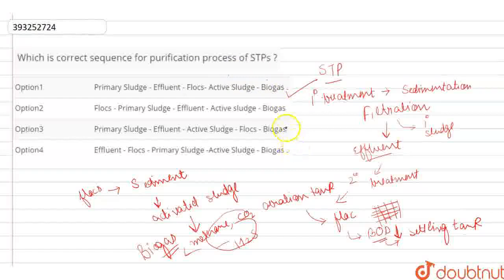Let's see the other options. In option 2, flocs come first, but flocs are not at the start. In the beginning, there is primary sludge. So this is incorrect. Option 3 has primary sludge after effluent, but effluent comes after primary sludge. So it is incorrect. Option 4, effluent is not at the start. Primary sludge comes first. So the fourth option is also incorrect. Which means our correct option is the first one.